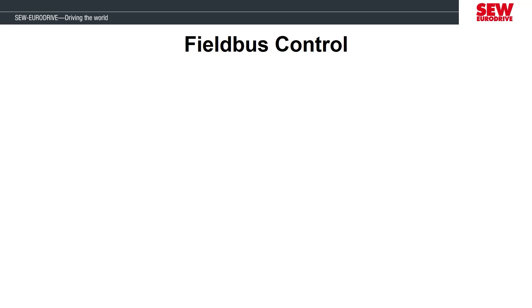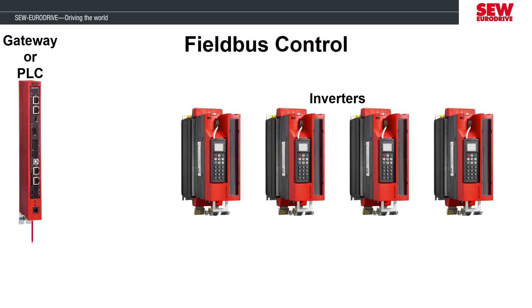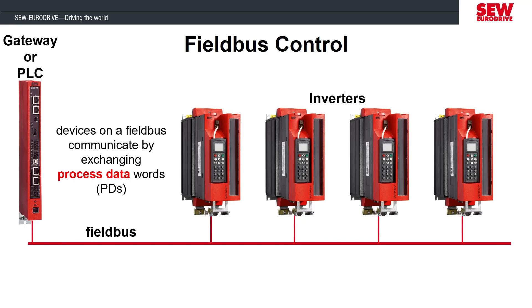If you're unfamiliar with fieldbus controls, you may need a short introduction to a common way it's used. A lot of fieldbus networks will have a gateway or PLC as the upstream device and then one or more inverters as the downstream devices. These will be connected together over an industrial network and will communicate using what's called process data words.